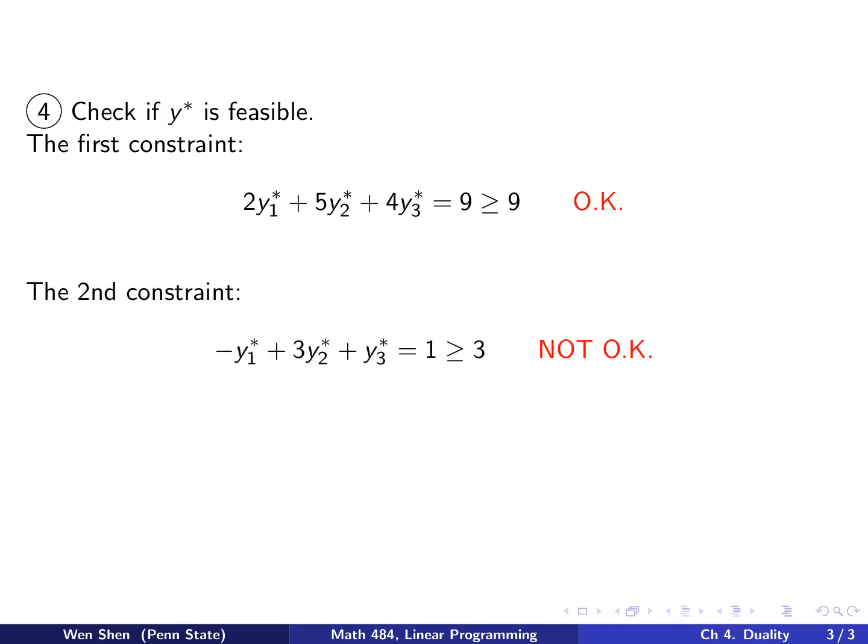Let's go to the second constraint. This is the left-hand side of the constraint. Plug in the solution, I get 1, and the constraint wants it to be bigger than or equal to 3. So this is not okay. The constraint is not satisfied. So what does that mean? Well, this means that y star is not feasible.